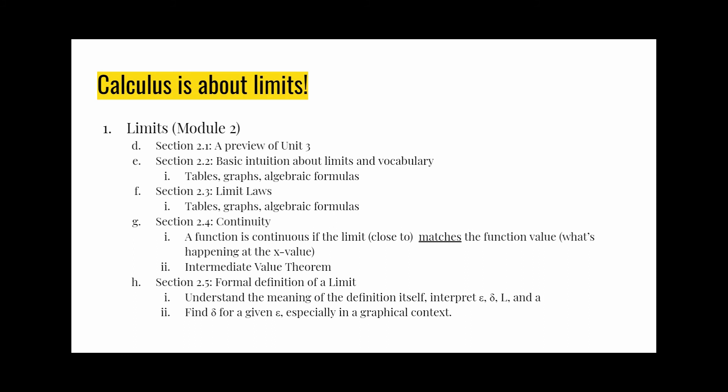And the implications for that have to do with something called the intermediate value theorem. And then at the end of the module is a formal definition of a limit. And I just want to point out here, it can be pretty tricky for students in section 2.5. If you leave section 2.5 feeling a bit foggy about how and why things work the way they do, that's okay. That's a typical result of section 2.5. But I'm certainly available to help you try and understand it as best you can.